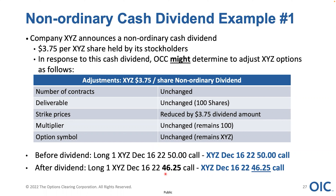Strike prices are being reduced by the amount of the dividend to make option holders whole. Before the dividend, you had the right to buy 100 shares at $50; after the dividend, you have the same right but now at $46.25. Economically nothing's changed — you still own the at-the-money contract, except that now you own the right to buy it $3.75 lower than before.